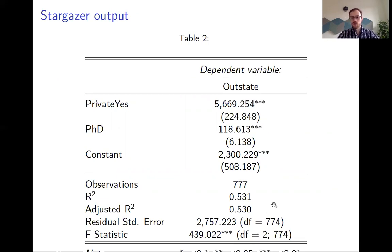Stargazer has a lot of different options. You can, for example, say that you only want to display some of the explanatory variables, you can say you want to get rid of some of the summary statistics. Whatever you want, you can add additional indicators for fixed effects, for example. It has all the flexibility that you need to format your table in a way that you want to publish it.